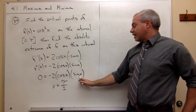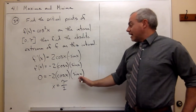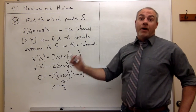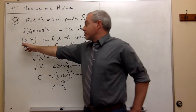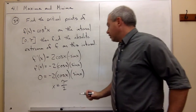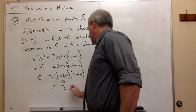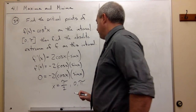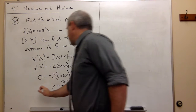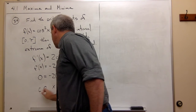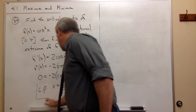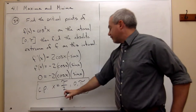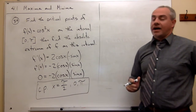What about for sine? Well, sin(0) = 0 and sin(π) = 0 — both of those are in this interval. So I can add zero and π to my list. My critical points are therefore x = π/2, x = 0, and x = π.